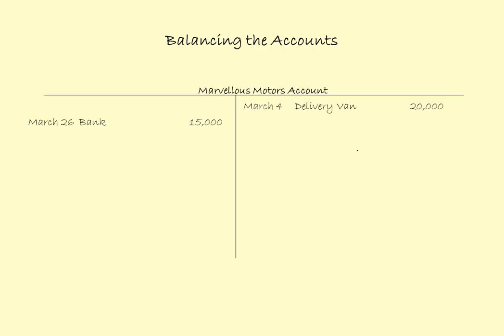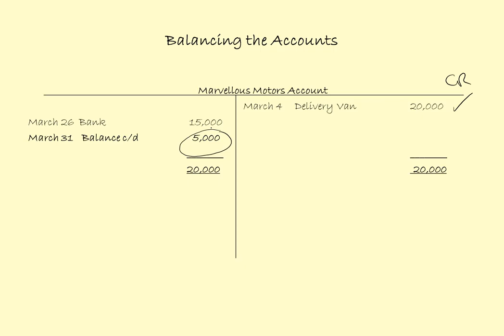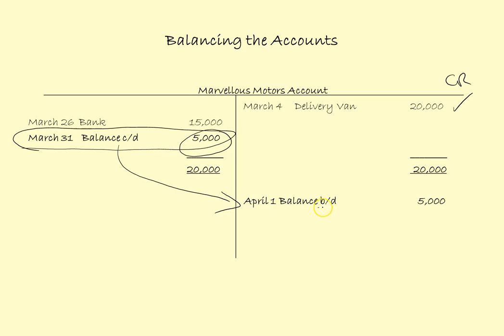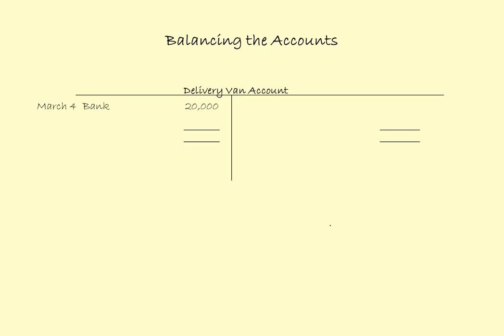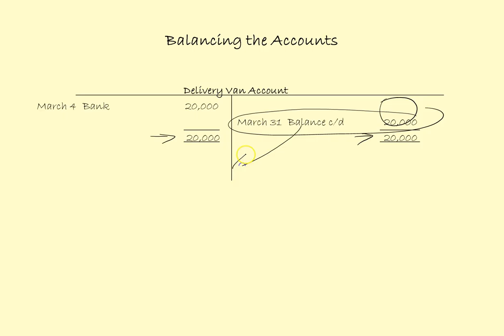Marvelous Motors account — they are creditors as well. We bought the delivery van from them on credit and paid them. The bigger side is the credit side, total 20,000. I put those figures in and then put the difference — the amount we still owe them. The difference is 5,000: March 31st, balance carried down, 5,000. We bring this over onto the credit side: April the 1st, balance brought down, 5,000. Delivery van account is an asset account with only one transaction — 20,000 column totals, balance carried down 20,000, brought down onto the debit side: April the 1st, balance brought down, 20,000.